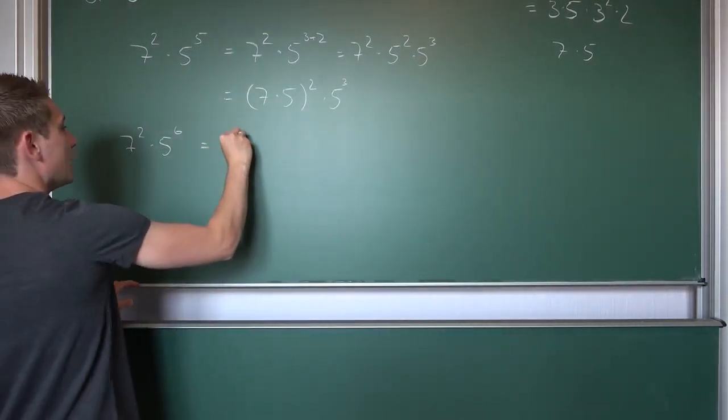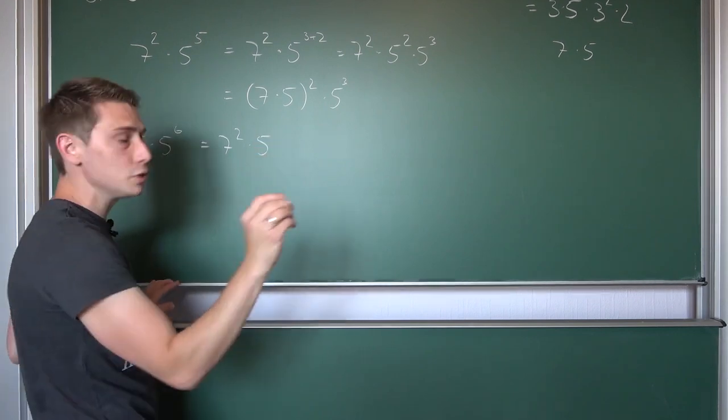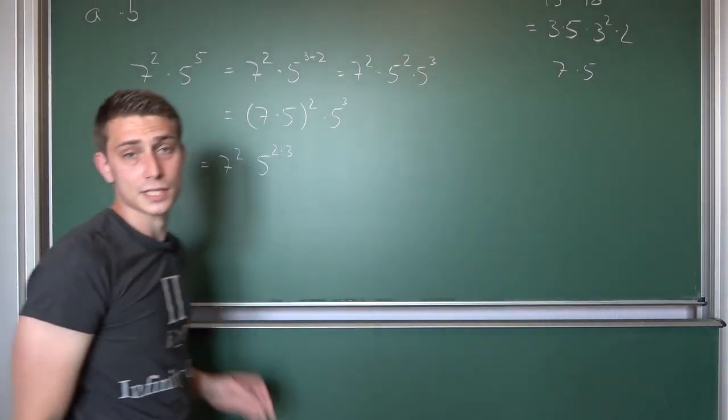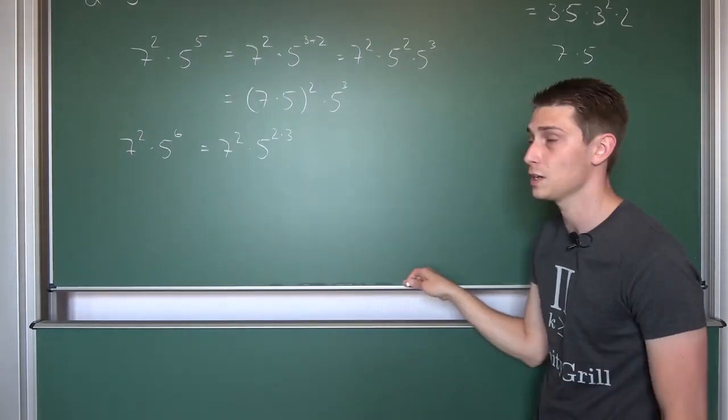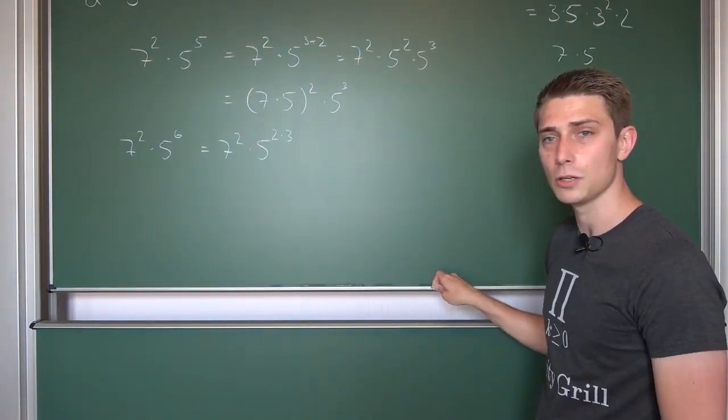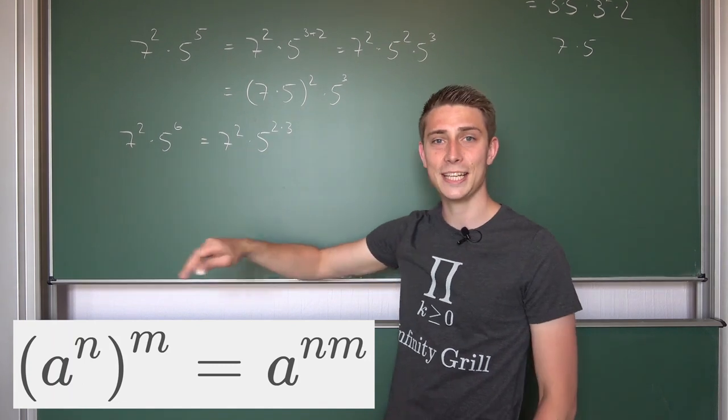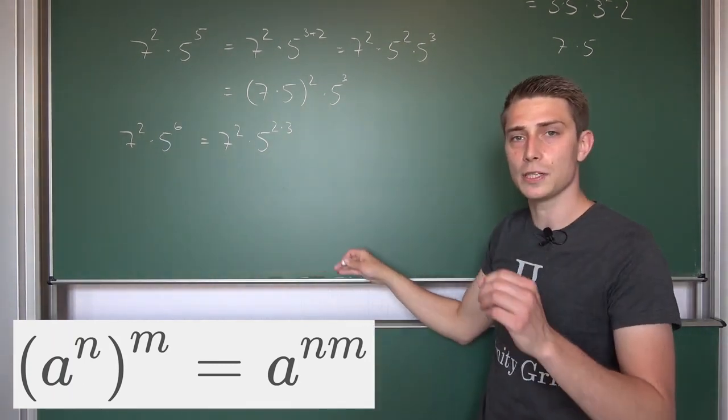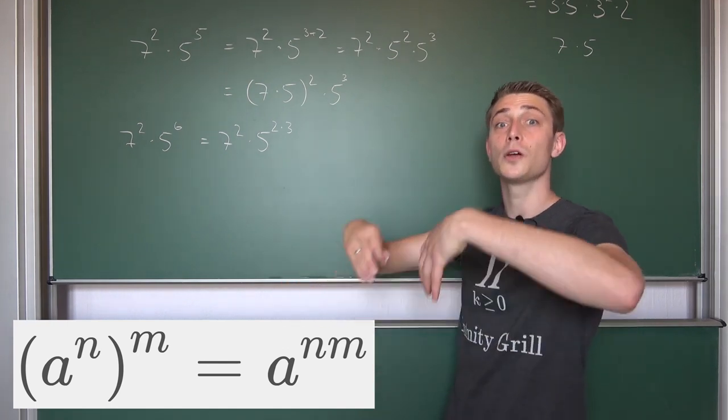So this makes 7 squared times 5 to the 2 times 3rd power. 2 times 3 is 6, obviously. It holds for the natural numbers. Now we can make use of the exponentiating exponential rule. Meaning, 5 to the 2 times 3th power is 5 cubed squared.